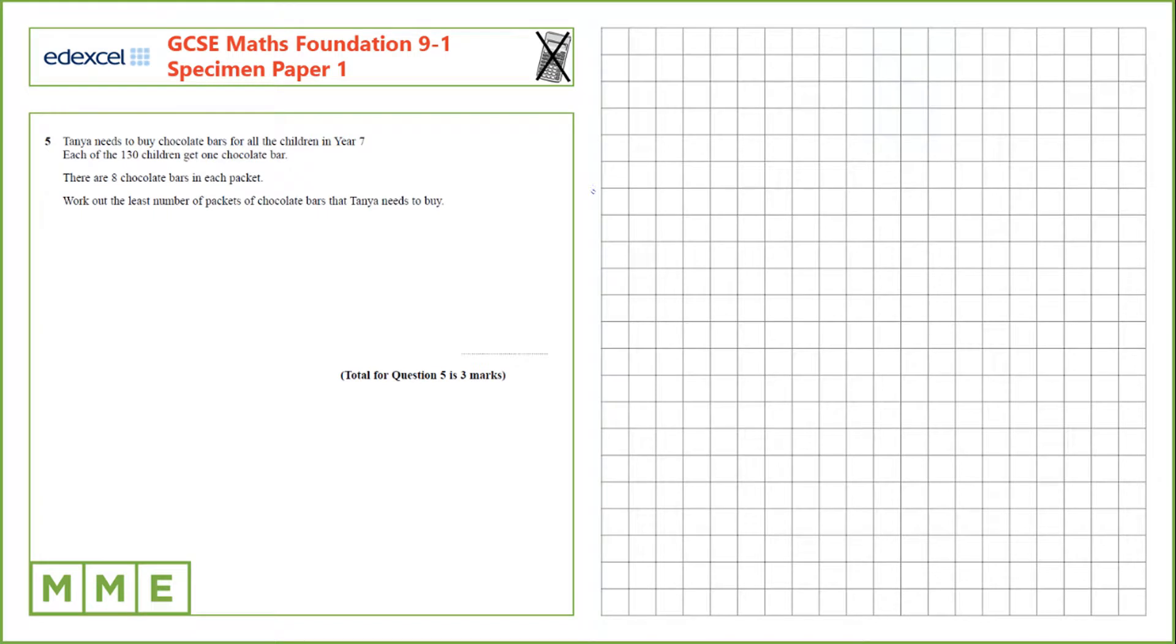Question 5. Tanya needs to buy chocolate bars for all the children in year 7. Each of the 130 children get a chocolate bar and there are 8 chocolate bars in each packet. Work out the least number of packets of chocolate bars that Tanya needs to buy.